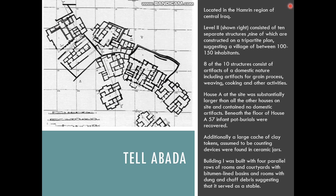In Level Two, the excavations here used horizontal techniques and were able to excavate most of a modern village. There are 10 structures at the site, and eight of those are built on a tripartite plan and contain artifacts of a domestic nature, including things for grain processing, weaving, cooking, and other activities. We can kind of see this as being the typical agricultural community.